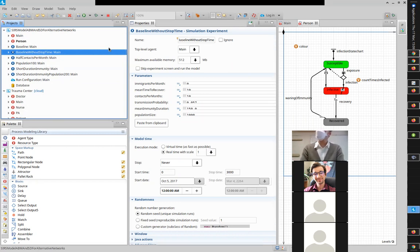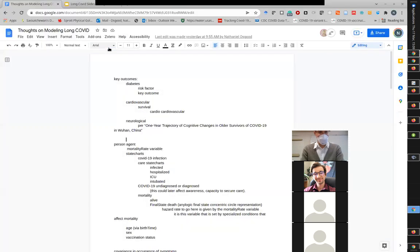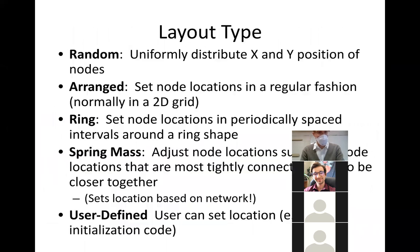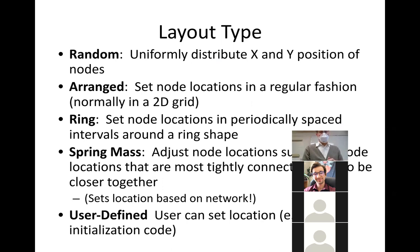We've just seen a network known as Poisson random, Erdős random, or Bernoulli random. Now we're going to look at another type: people laid out in space and connected if they're nearby in space. We're going back to the baseline and changing to a distance-based connection with a connection range of 28.675. This range is chosen to give the same average number of people connected.